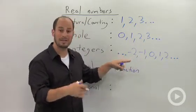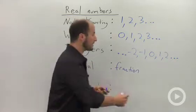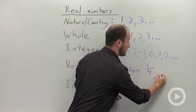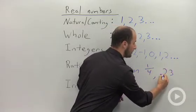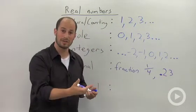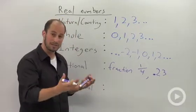Negative 2 can be written as negative 2 over 1, so it's a rational number. That also includes things like 1/4 or 0.23, because 0.23 can be written as 23 over 100. Basically, any number that can be written as a fraction is rational.